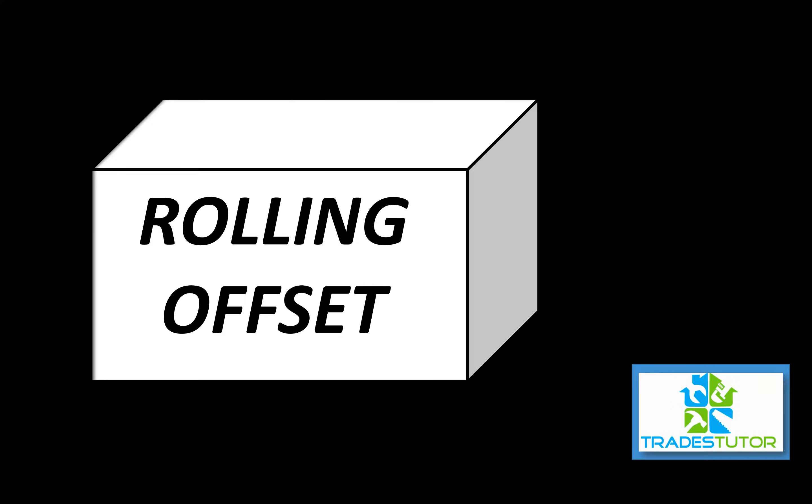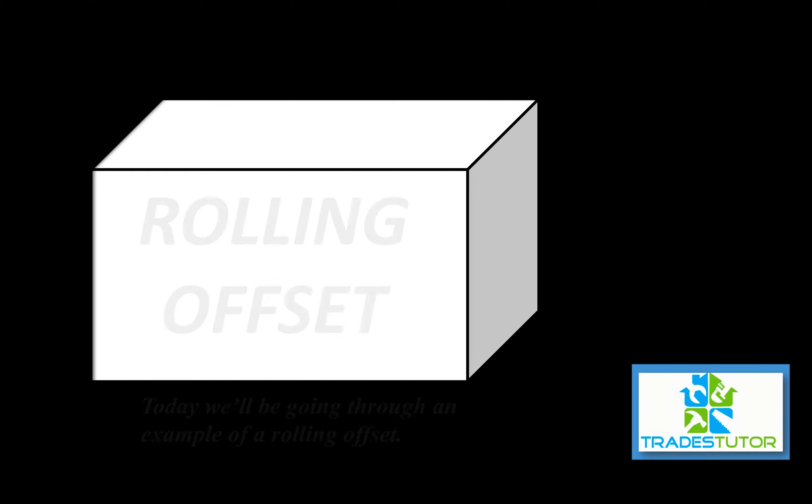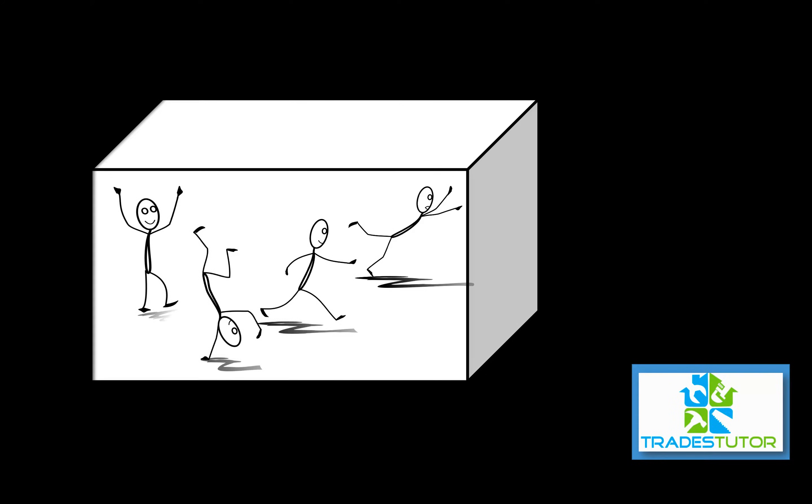So today we're going to look at rolling offset and we're going to be going through an example of a rolling offset. So what we have there is a room or a space. You can see it's three dimensional. It has a length, a width, and a height. And if you wanted, you could go in that room and goof around in that room like looks like Johnny's doing right now.